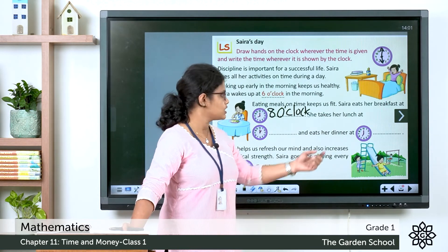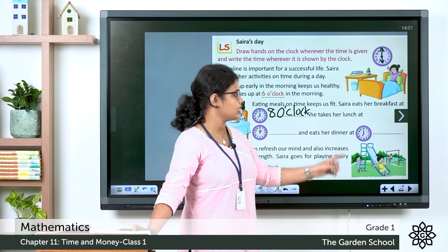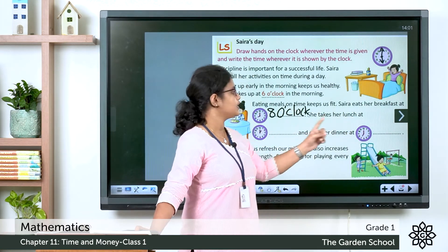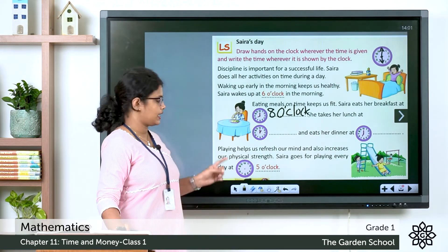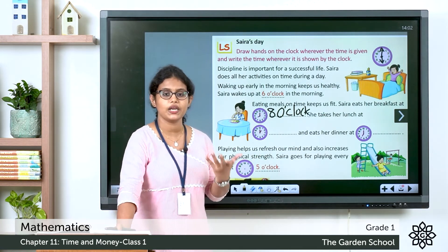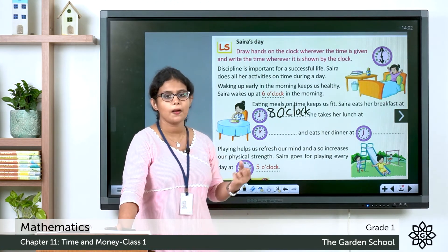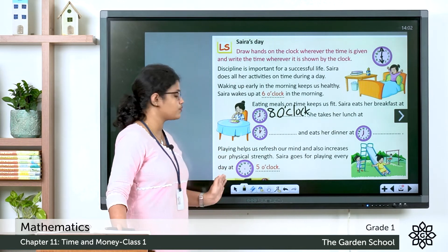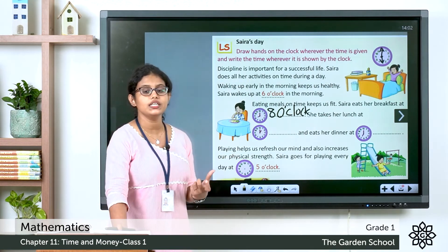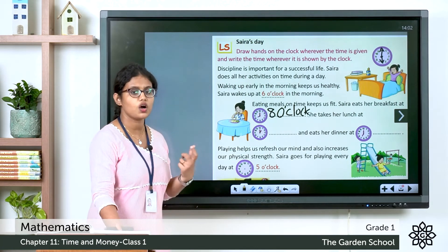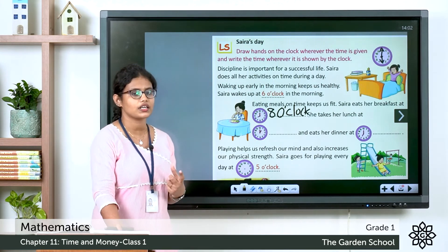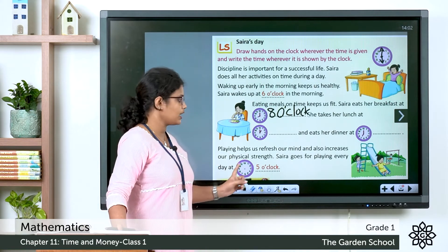Sarah eats her dinner — the hour hand points to 7 and the minute hand is exactly at 12, so it is 7 o'clock. Write 7 o'clock. Playing helps us refresh our mind and increases our physical strength. Sarah goes for playing every day at 5 o'clock — you have to draw the hands on the clock. The hour hand, the short hand, points to 5, and the minute hand points exactly at 12.